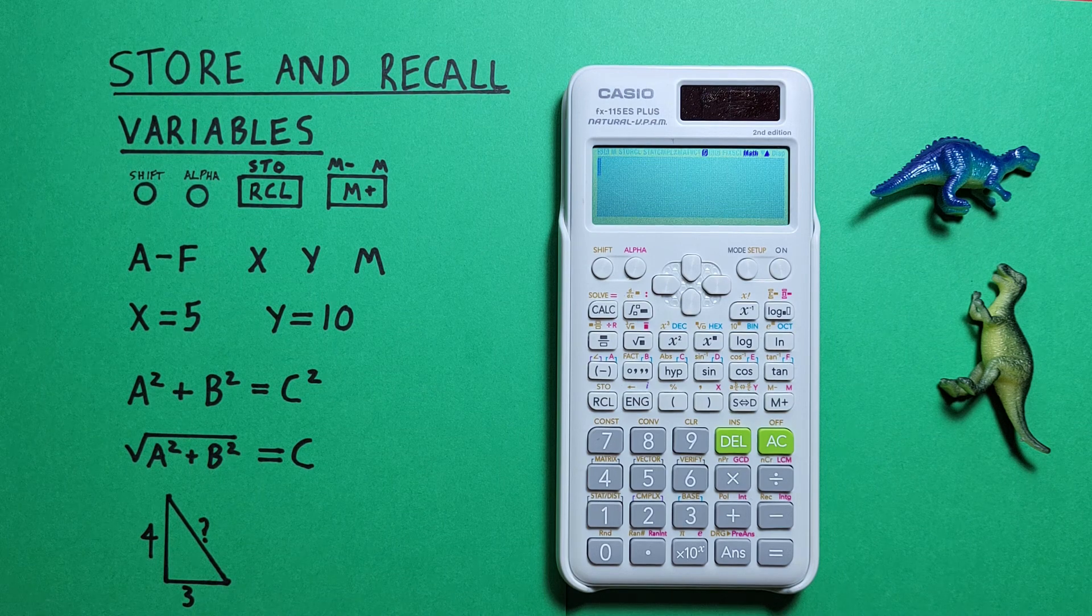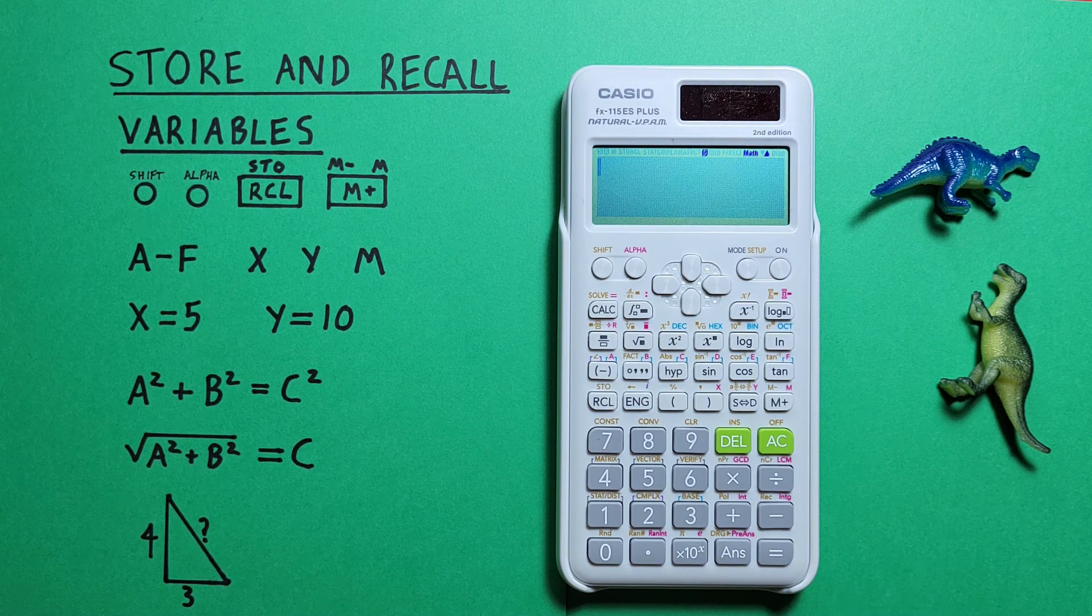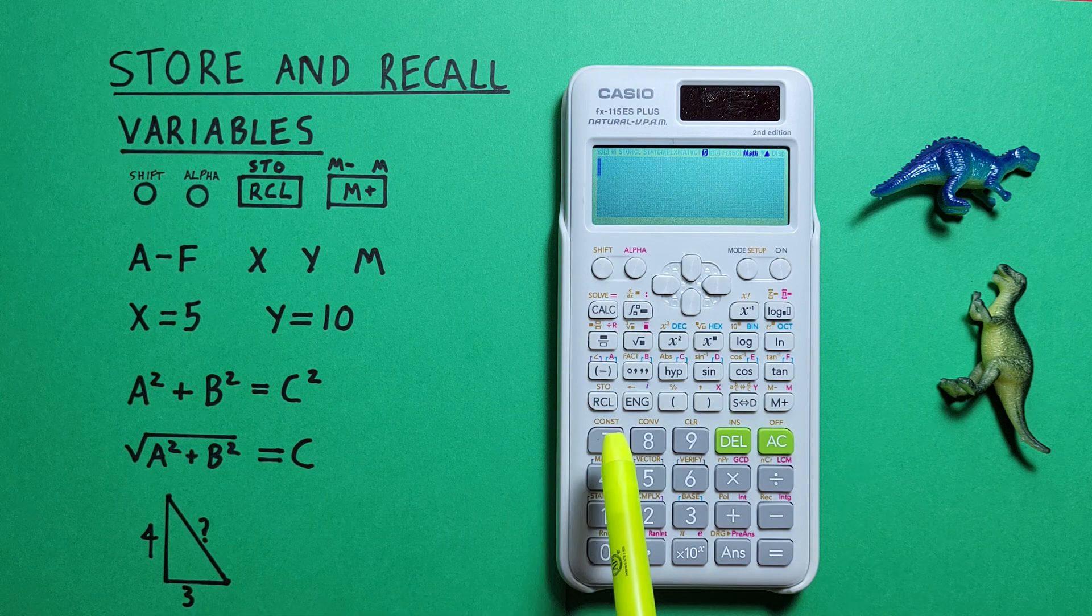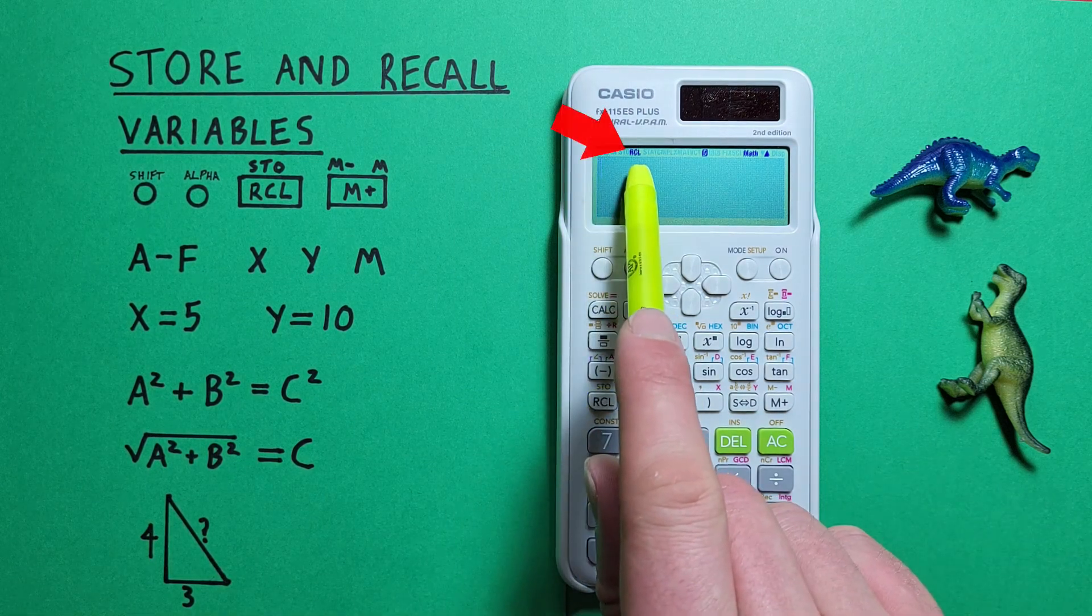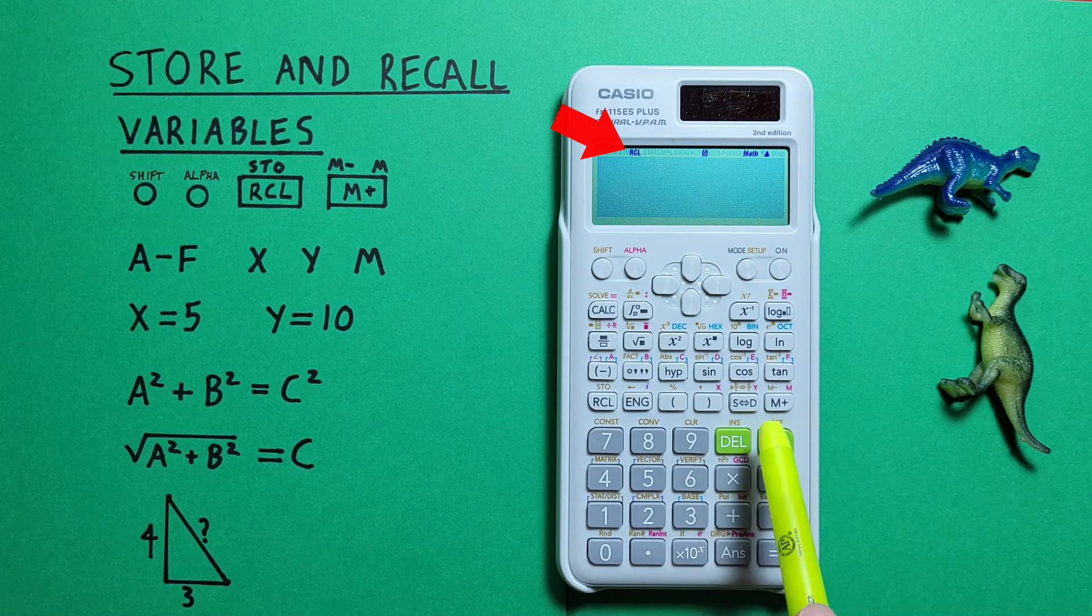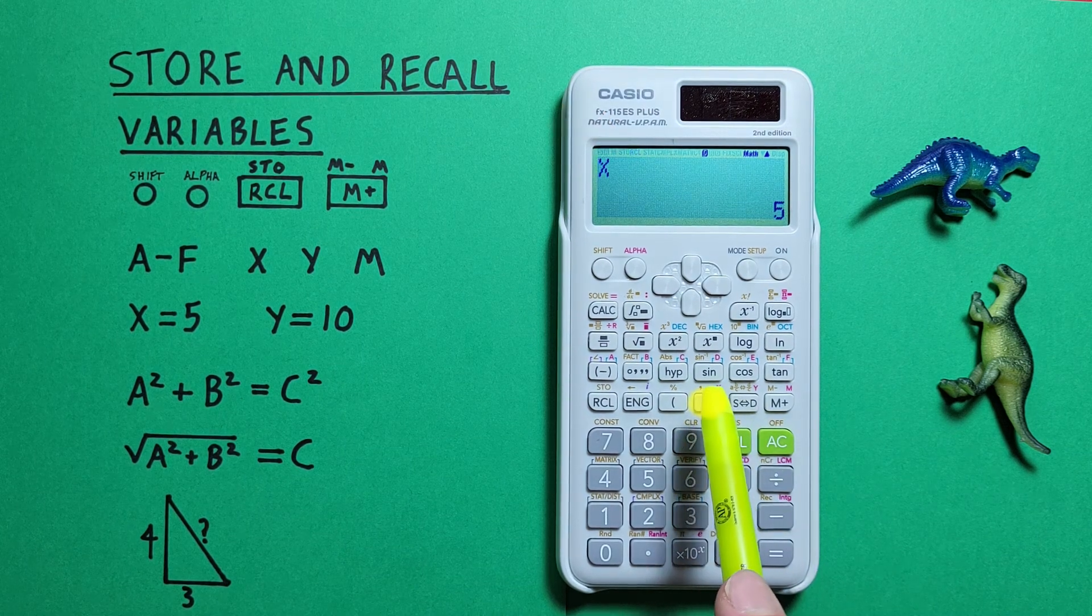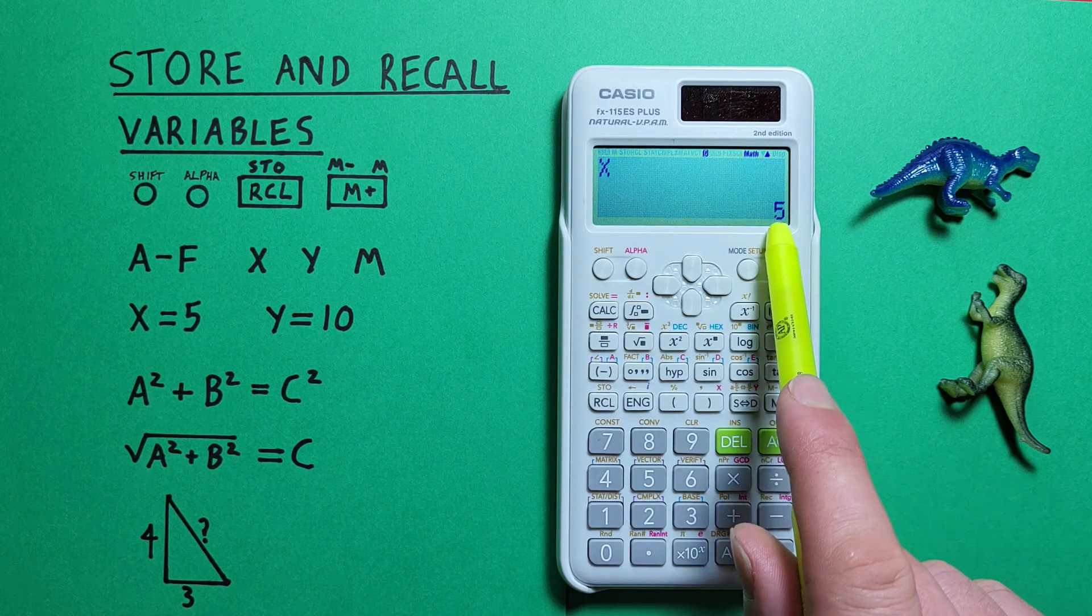Now if it's later on and we want to recall those values, like say we want to get our X value back, we can press the RCL key or recall. We see RCL at the top there and then we choose our X memory slot and we see X is equal to 5.